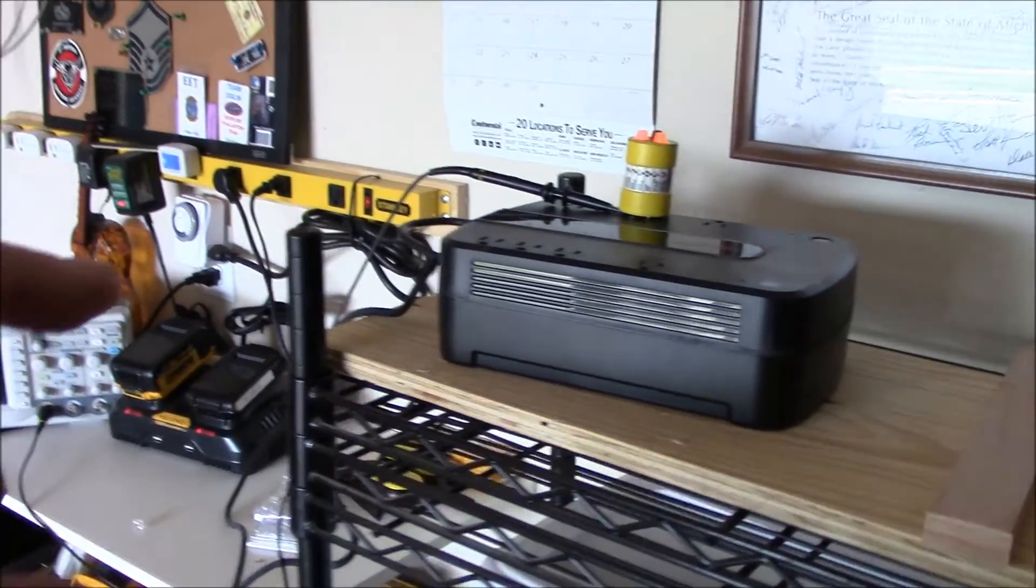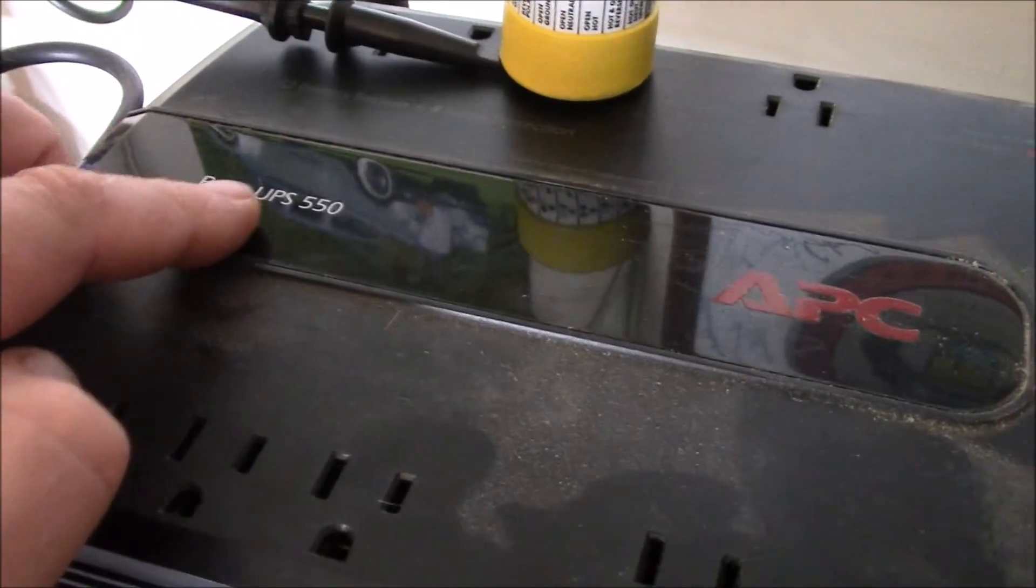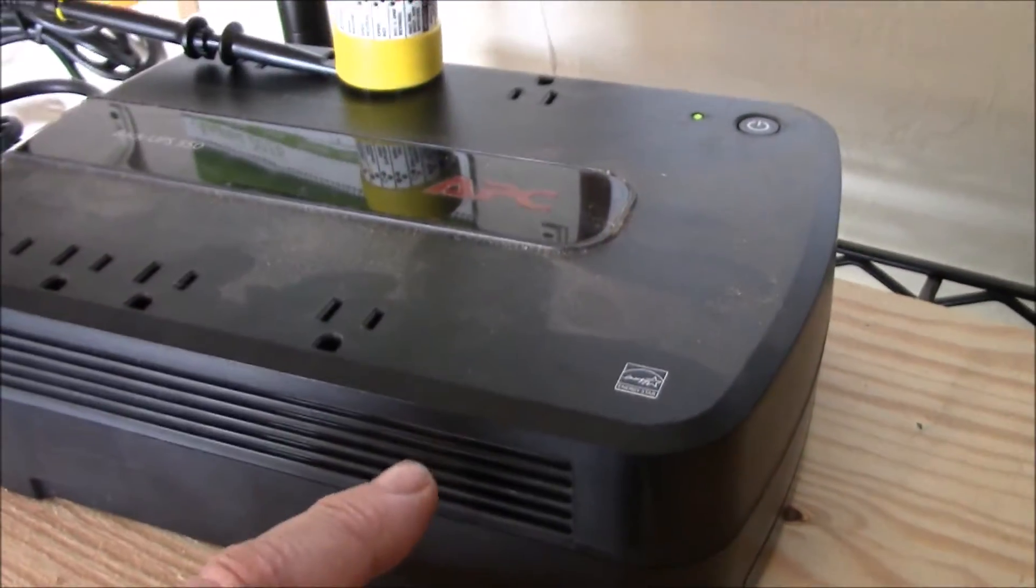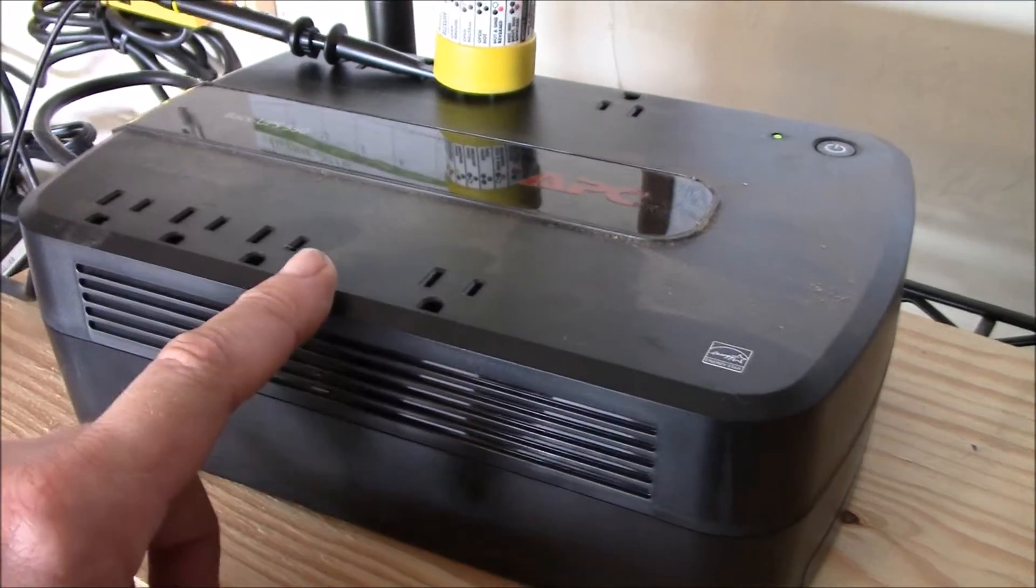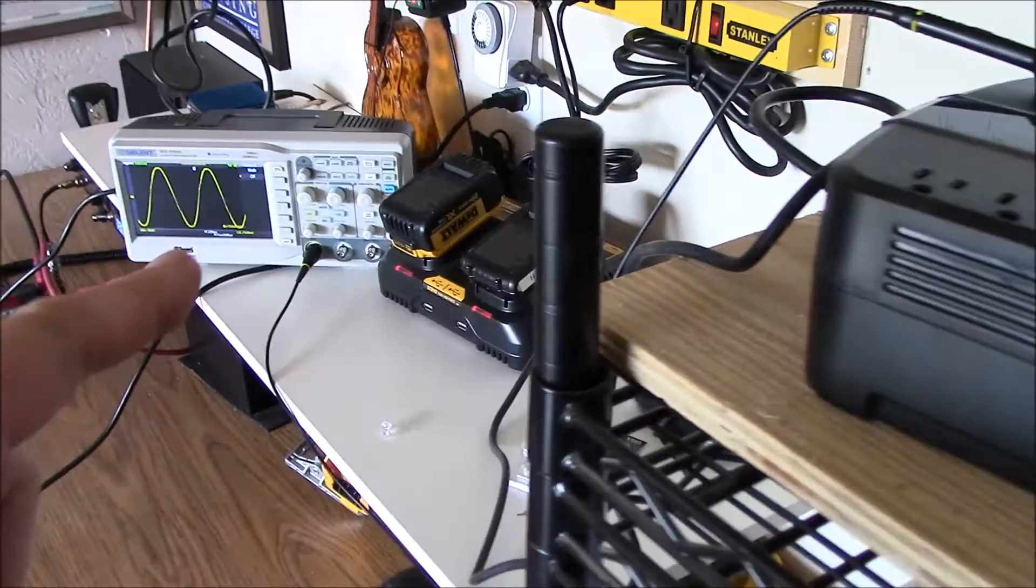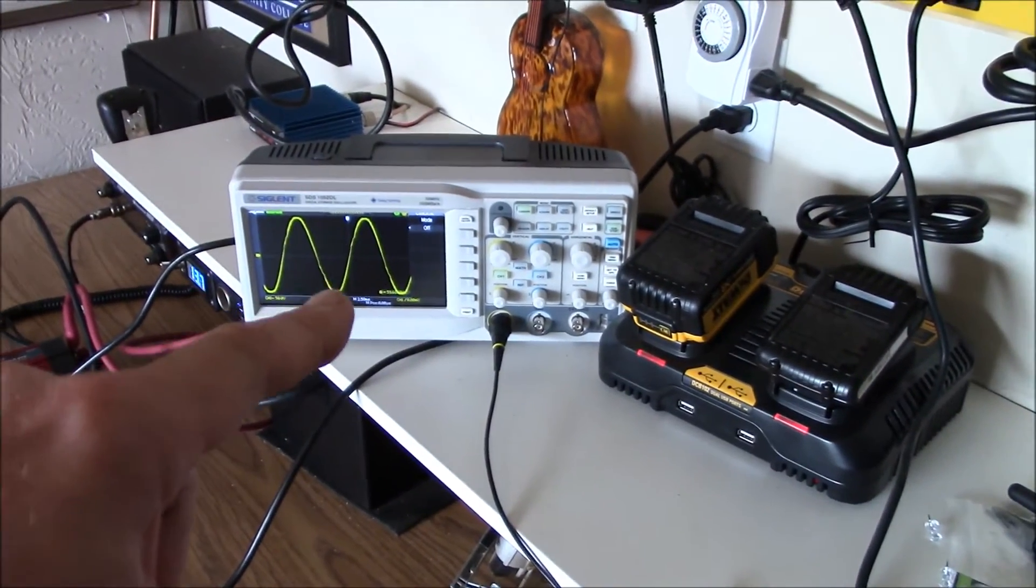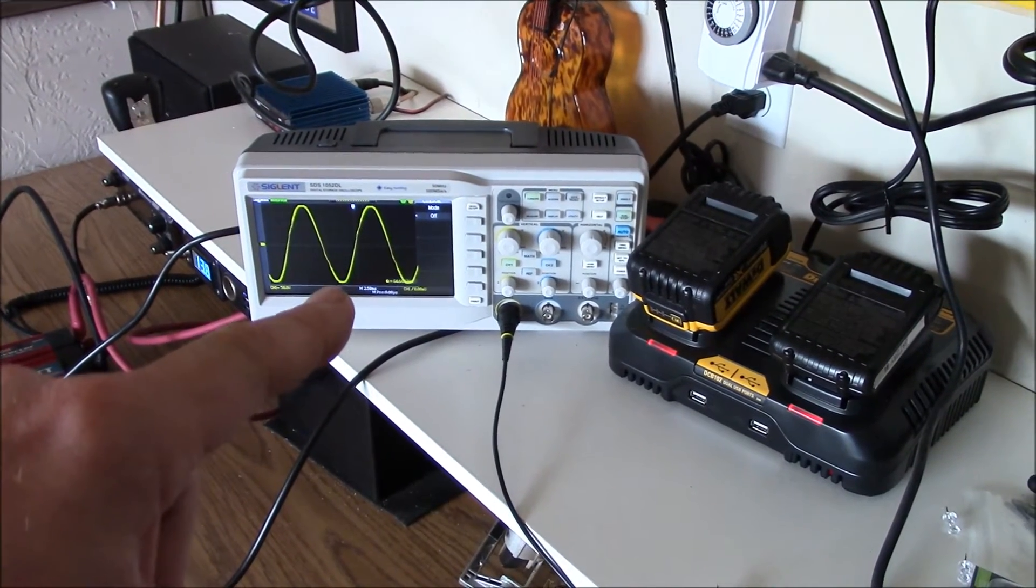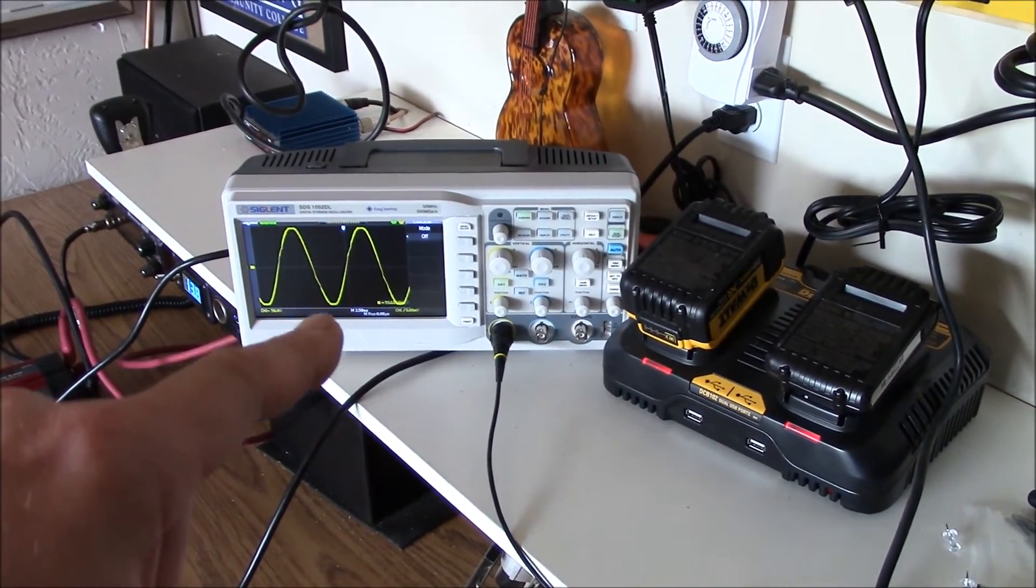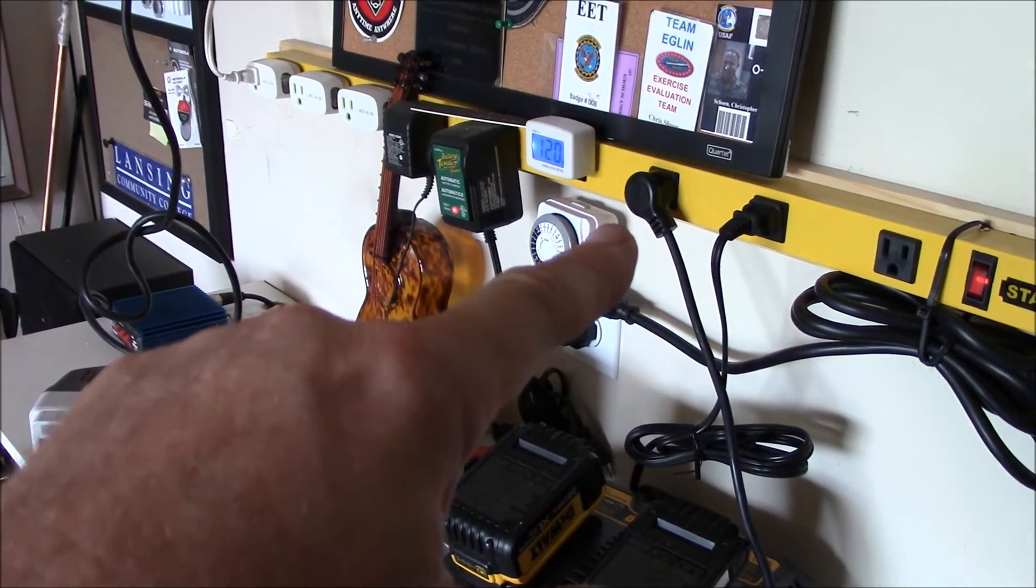Now this is an APC Schneider battery backup. Got this about a year ago, Energy Star compliant and relatively new. Got the probe hooked up to the hot lead and an oscilloscope. So this right here is what's coming off the inverter. So let's do a simulated power failure and show you what happens to the waveform.